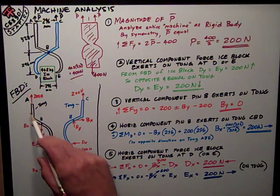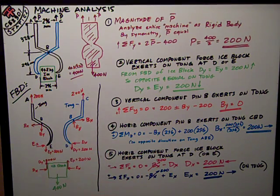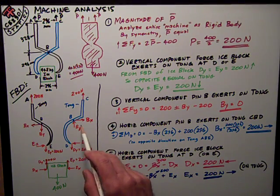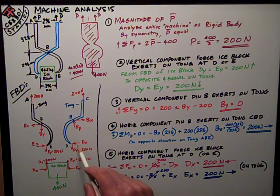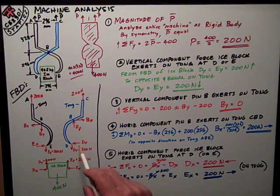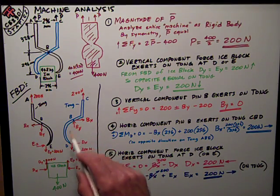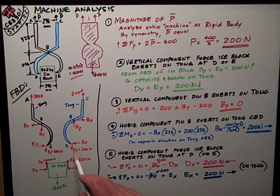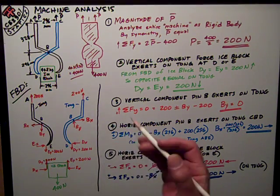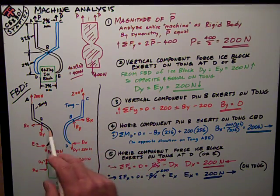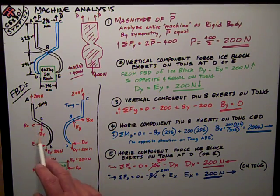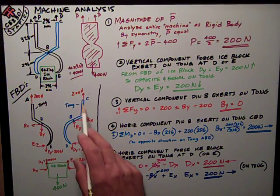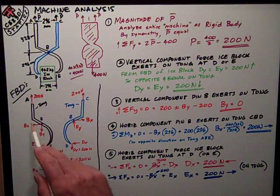At pin B, where the two tongs meet and connect with a pin, I've just assumed them. I've kind of looked ahead and seen where I was going, and so I assume them. I start off on B, and I assume on CBD, and I assume Bx, opposite direction of dx, and By, the opposite direction of dy. Doesn't make any difference. I just assume something. And then I go to the other tong, and I assume equal and opposite. By was up here, so it's down on ABE. It's to the right on this one, so it's to the left on ABE.